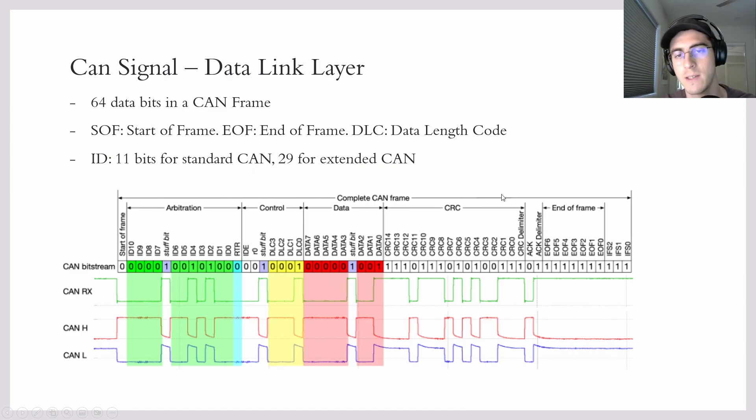Then we send the data and another stuff bit. After all the data is sent, we send something called a CRC. And CRC is a cyclic redundancy check. And it's pretty much just a sort of cryptographic function of our data, of our CAN frame, to make sure that there are no corruptions in the data.